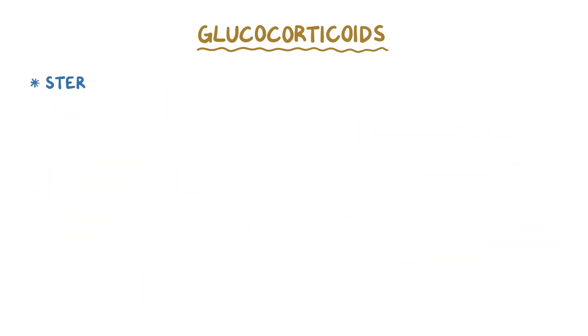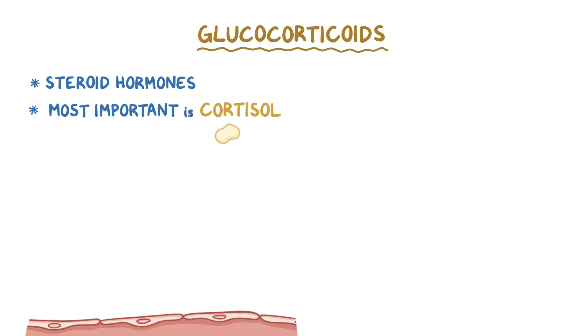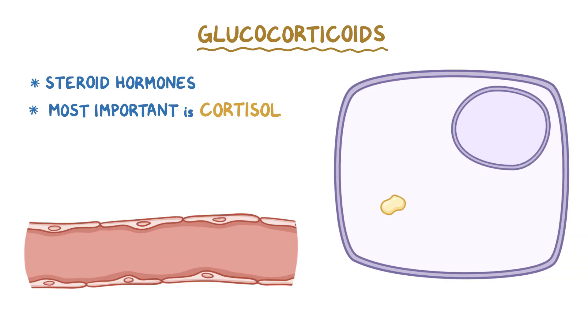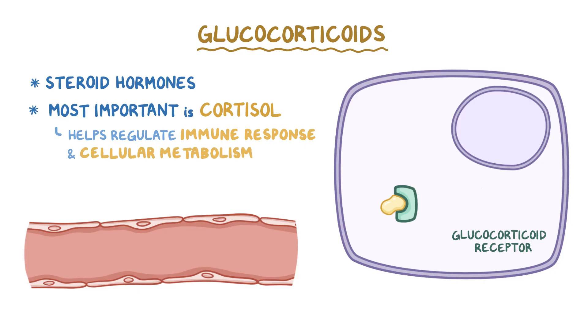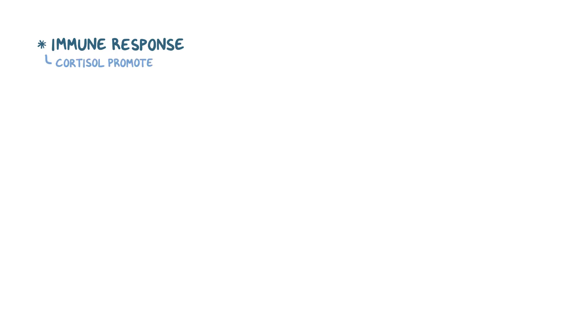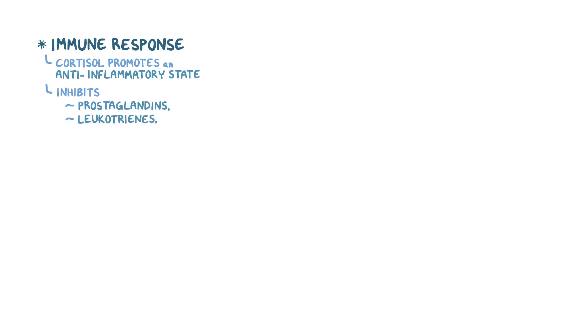Glucocorticoids are a class of steroid hormones, and the most important glucocorticoid in humans is cortisol. Once it's made, cortisol travels via the blood and binds to glucocorticoid receptors, which are generally intracellular receptors within nearly every cell in the body. Cortisol helps regulate both the immune response and cellular metabolism. With regard to the immune response, cortisol promotes an overall anti-inflammatory state by inhibiting prostaglandins and leukotrienes, as well as inhibiting interleukin-2 production by white blood cells.